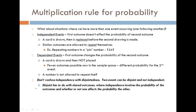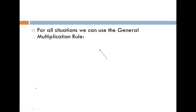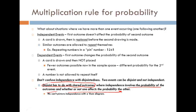Disjoint has to do with shared outcomes and simultaneous events, whereas independence involves the probability of the outcomes and whether one affects the probability of the other. With a Venn diagram, we can't picture independence, so what we'll do is use a contingency table.